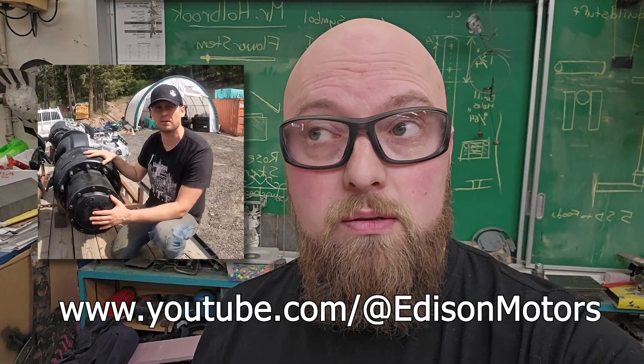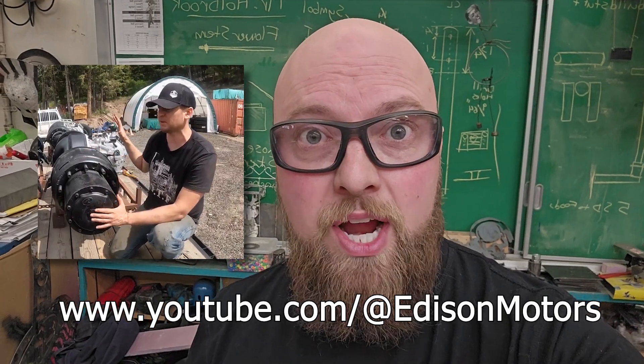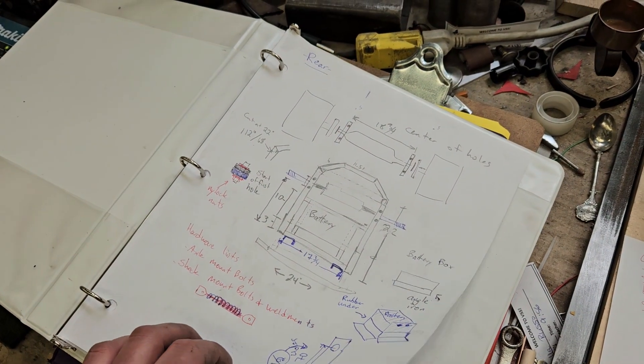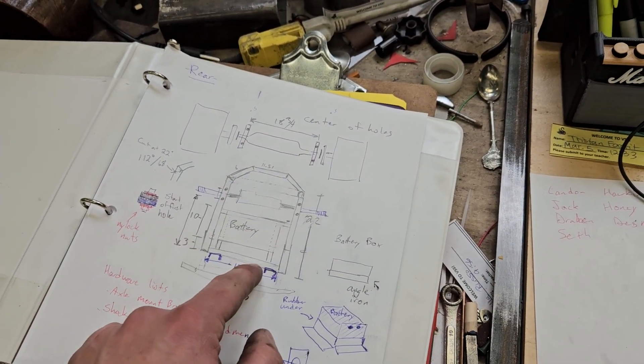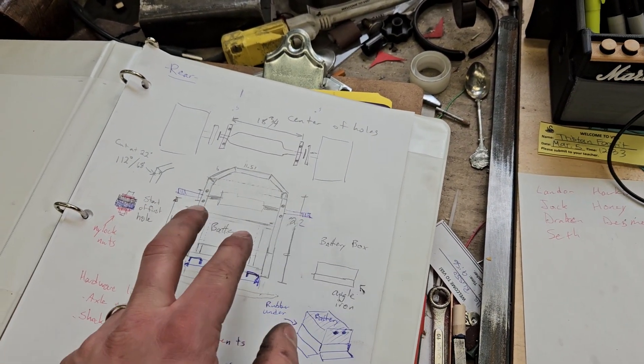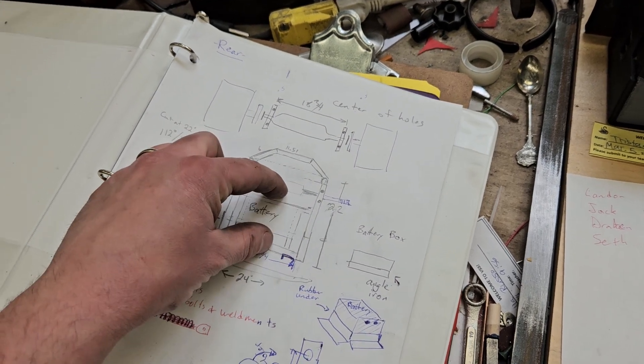So my senior metal class is doing the go-kart electric Edison challenge. I've got students drawing things up and we have a big binder to organize things. Today we worked on making the back end that is going to be holding the axle, battery and something else. We've left lots of room.